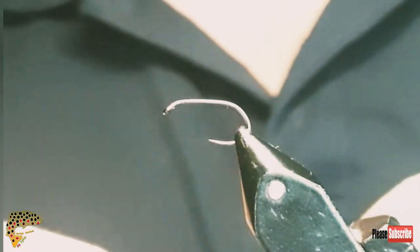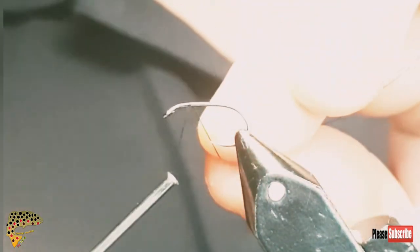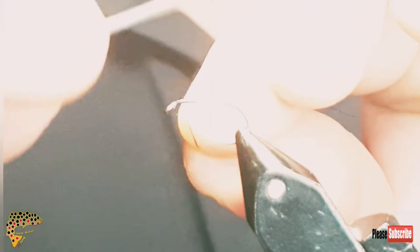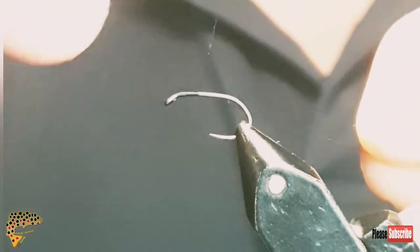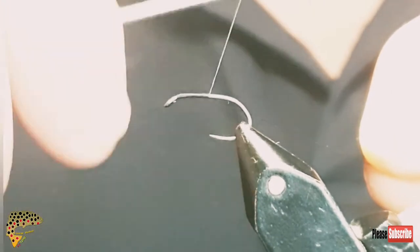Hi guys, tonight I'm going to tie a buzzer. The hook I've got is a size 12 wet from Frank Raman. The thread I'm using is a 6-0 extreme in black.